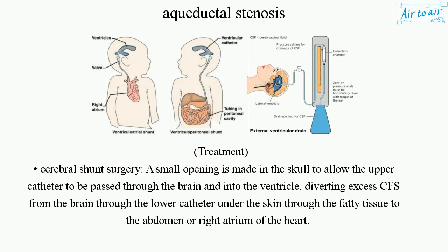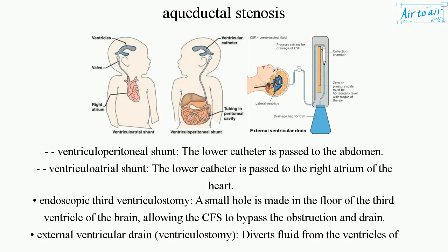Treatment: cerebral shunt surgery. A small opening is made in the skull to allow the upper catheter to be passed through the brain and into the ventricle, diverting excess CSF from the brain through the lower catheter under the skin to the abdomen or right atrium of the heart. This is known as a ventriculoperitoneal shunt, where the lower catheter is passed to the abdomen.